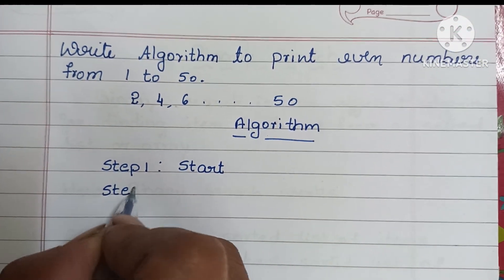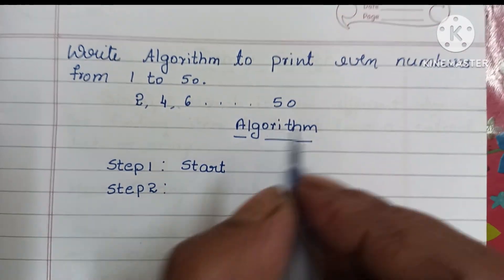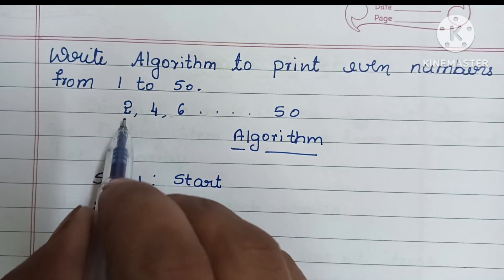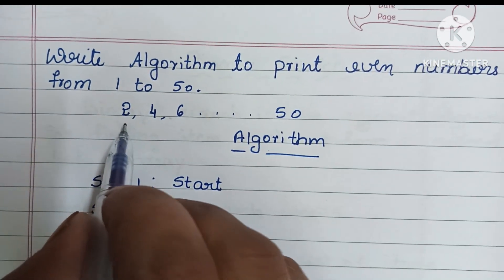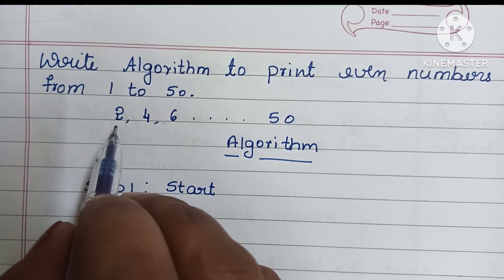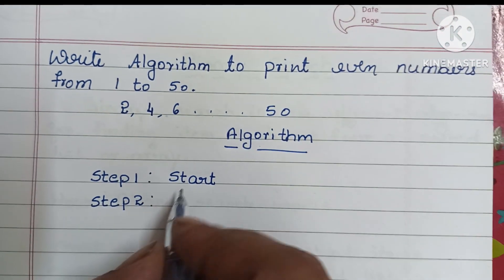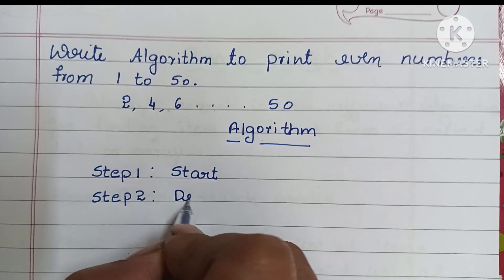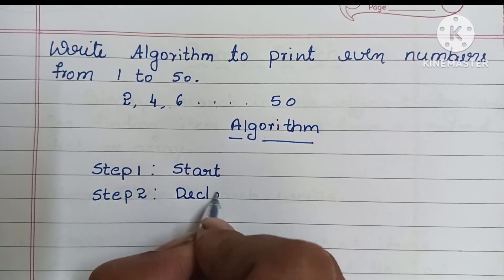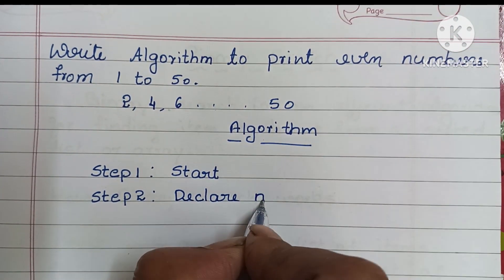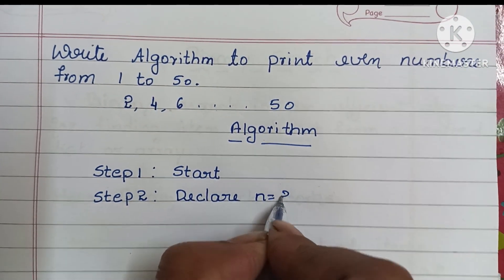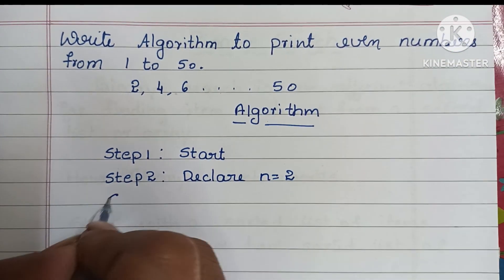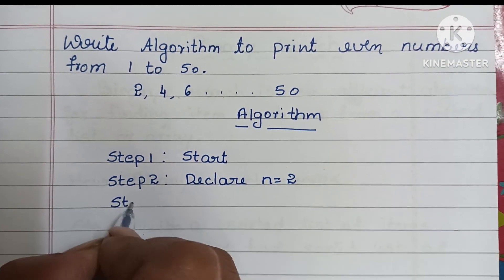Step 2: we know that our initial even number is 2, so here we declare n is equal to 2.